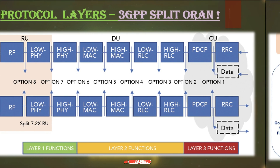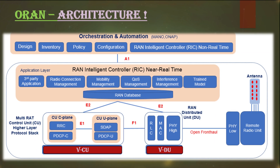Another important evolution in O-RAN is the introduction of RICs — Radio Intelligent Controllers — along with orchestration and automation, introduced by the O-RAN Alliance. The RIC is further subdivided into near-real-time RIC and non-real-time RIC. These can integrate third-party applications that collect information from the centralized unit and distribution unit to adjust network parameters and features for optimal services and high-quality user experience.